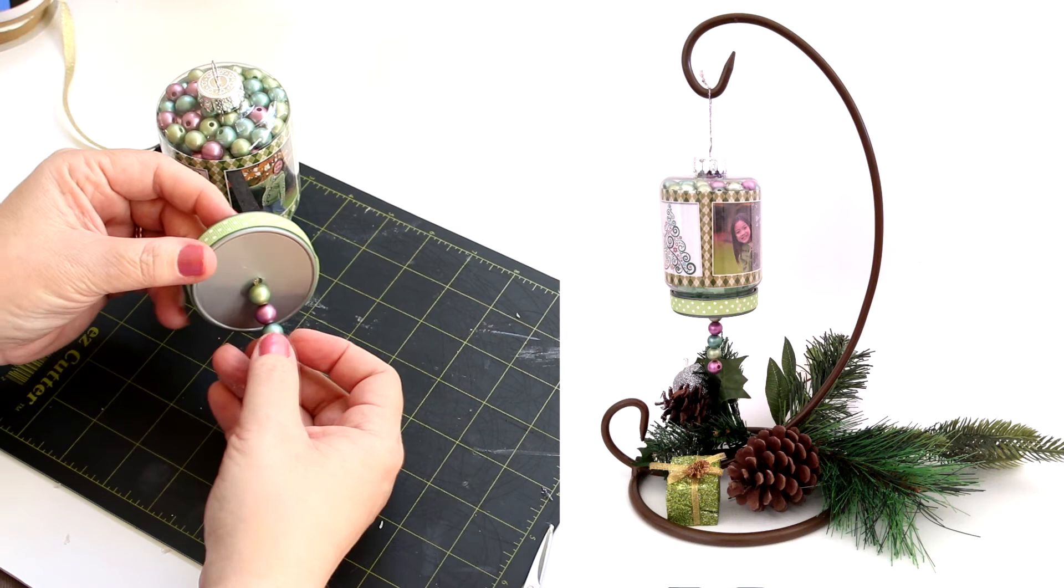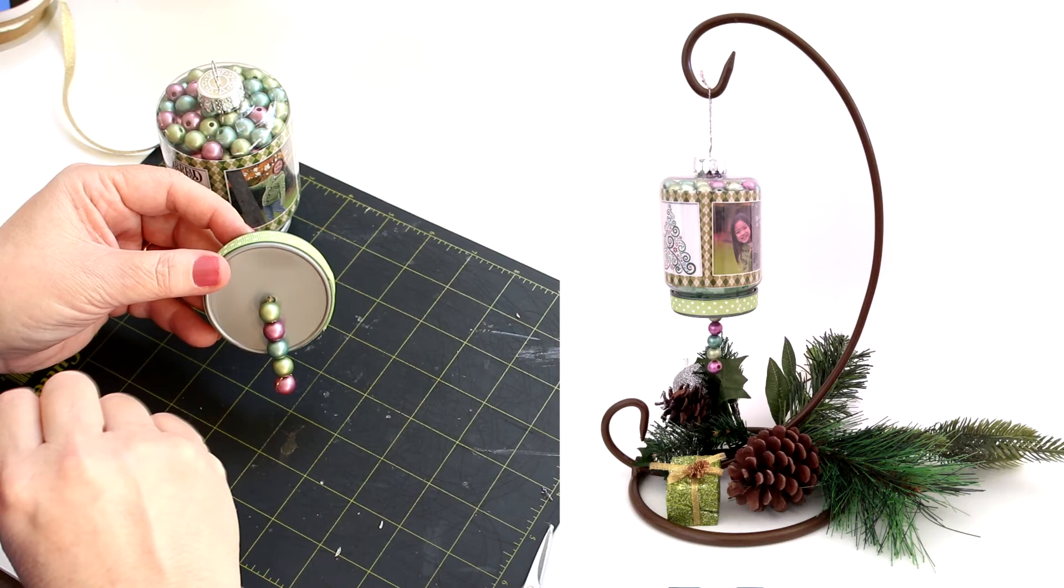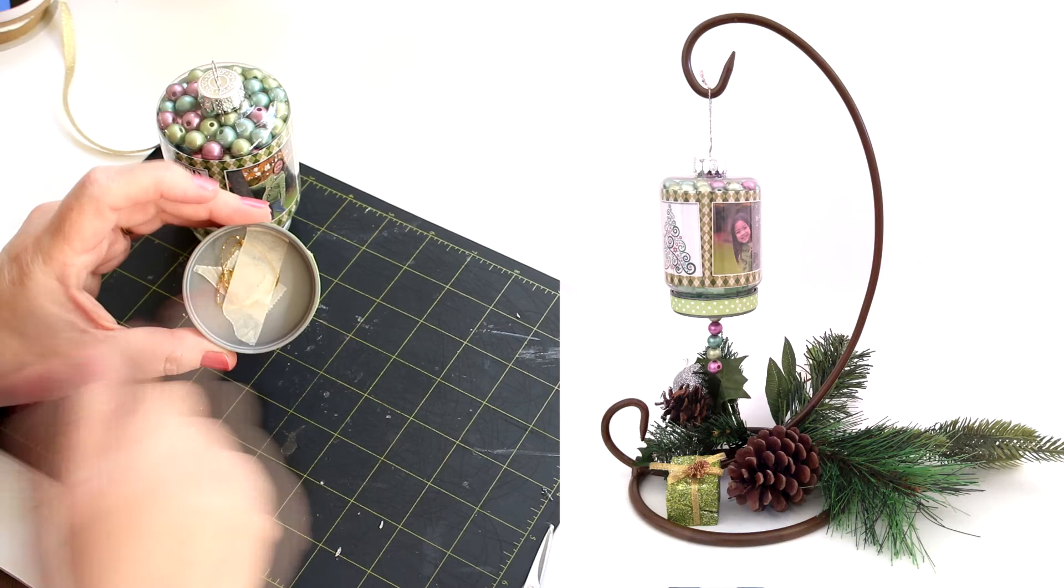So all I did was took a craft knife and just worked it through there till I got the hole the size that I needed. And then I just used a dab of glue, hot glue, and then I put some masking tape on there just to hold it in place.